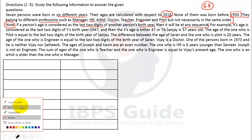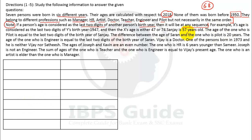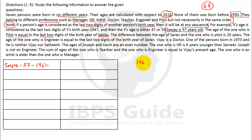Now let's read clue by clue. The puzzle states: Sanjay is 57 years old. So write Sanjay here. His age is 57. If we want to find his birth year, we subtract 57 from 2018, giving us birth year 1961. I am not writing his profession yet — I'll write it later in the professional column.